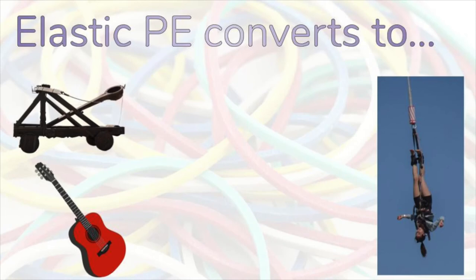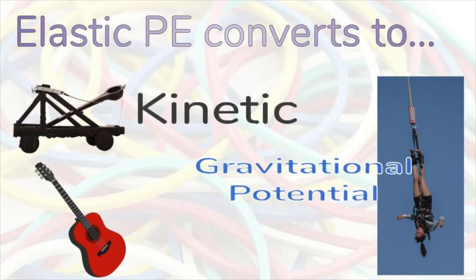A catapult, a guitar, and a bungee cord can all convert elastic potential energy into other forms. The catapult converts its elastic potential energy mostly into kinetic energy of the missile with a bit of gravitational potential energy when the missile rises. The bungee jumper is just about to rise and the elastic potential energy will convert to gravitational potential energy. The guitar string will vibrate with kinetic energy, which we experience as sound which carries energy.